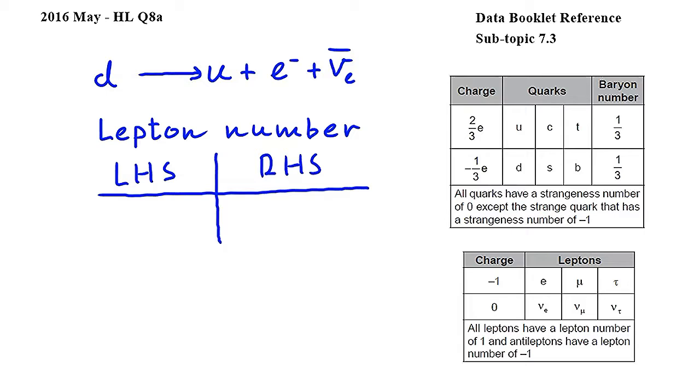Let's start with the left-hand side. Here we have a down quark, which can be found in the first table from subtopic 7.3, where we can see that the down quark is a quark and not a lepton. This means that the lepton number of the down quark is zero, so on the left-hand side of the equation the total lepton number is zero.